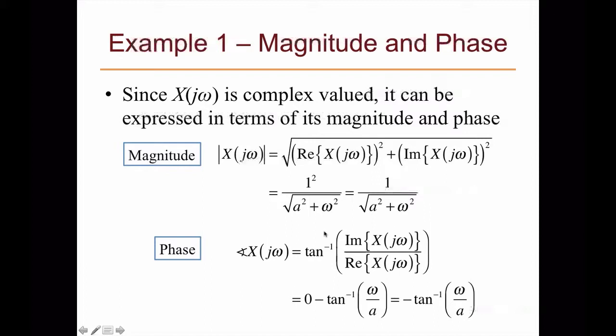So the magnitude of X(jω) equals 1 over the square root of a² + ω². For the phase, it must also be determined separately for numerator and denominator. The phase of the numerator equals 0, meaning e^(j·0). The phase of the denominator is arctan of the imaginary part over the real part, which is arctan(ω/a). Therefore the phase of X(jω) equals minus arctan(ω/a).